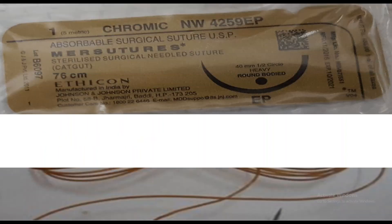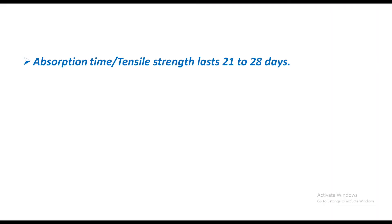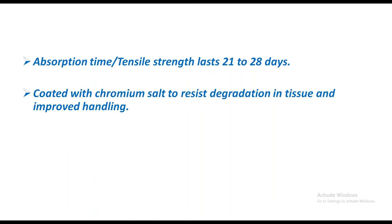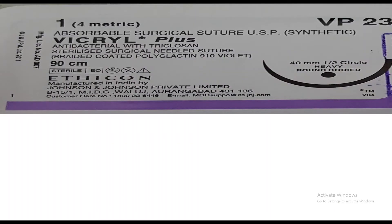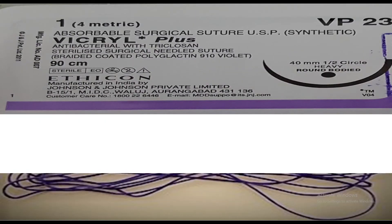Chromic catgut is brown in color. Its tensile strength lasts 21 to 28 days. It is coated with chromium salt to delay degradation in tissue and improve handling. The tissue reaction is moderate. It is used in circumcision, subcutaneous tissue approximation, and suturing muscle and fascia.